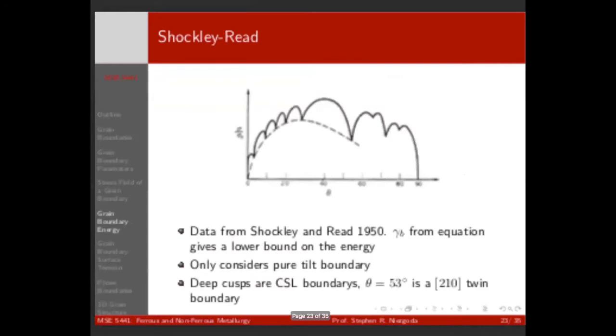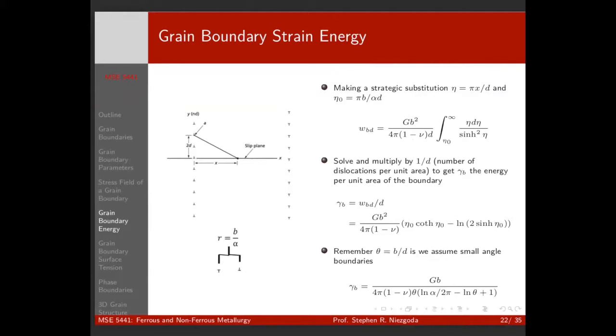Okay, so last week we left off with grain boundary strain energy, and I noticed there's a typo. I have a d in this equation, then multiply by 1 over d, and somehow the d disappears. I was very confused about this and it took me a long time to track it down.